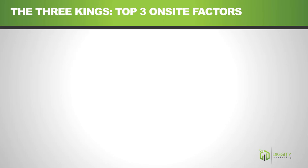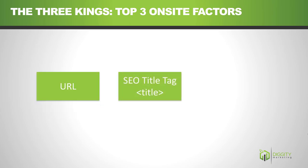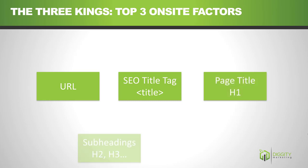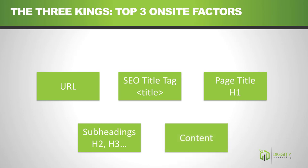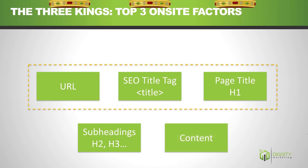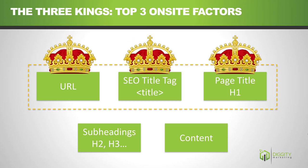Now let's talk about optimization. You know your keywords — now where do you put them? There are various places on a page that have more impact than others. The big ones I like to call the three kings. Let's list them all out: first is the URL, second is the SEO title tag, then the page title or H1. After that we have our subheadings — H2s, H3s, H4s — and then the content itself. The top three are the real big hitters that define what the page is about.